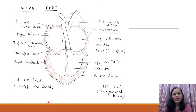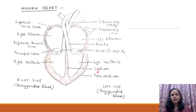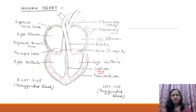Now, if you look at this diagram, it is very clear: the first chamber, the second chamber, the third chamber, and the fourth chamber. In between these four chambers, there is a totally vertical wall separating the left side and the right side of the heart, and we call that wall the septum. This is the septum which divides the heart vertically into two similar parts.